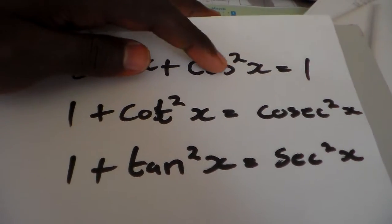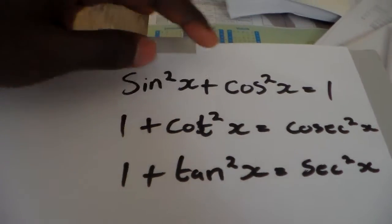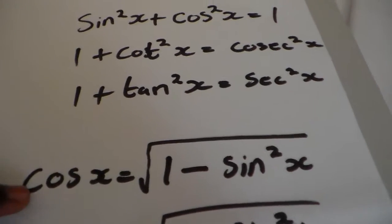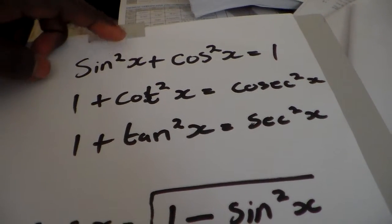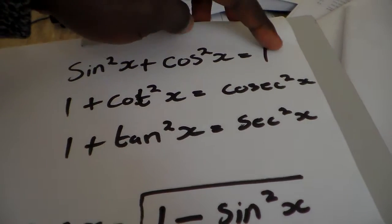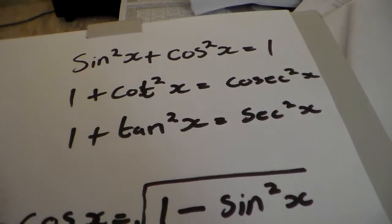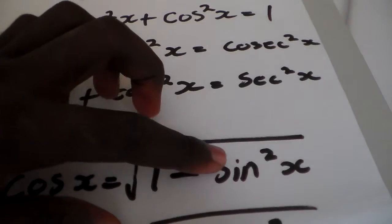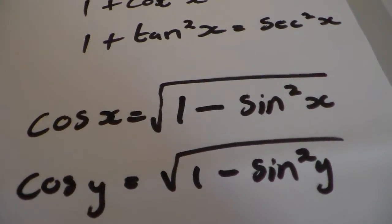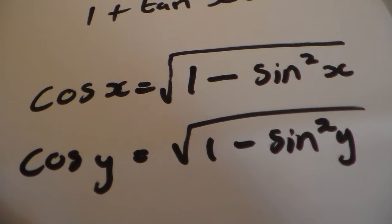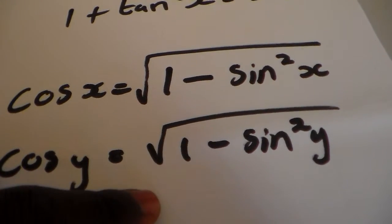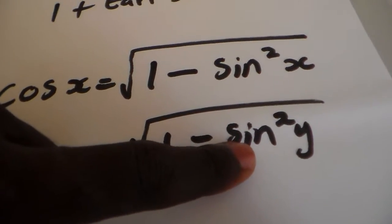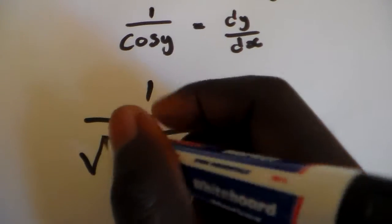Because of the Pythagorean identity, remember: sin²x plus cos²x is equal to 1. We're looking for the value of cos x in this identity. Rearranging, cos x equals the square root of 1 minus sin²x. In this case we're talking about y, so cos y equals the square root of 1 minus sin²y.